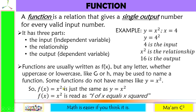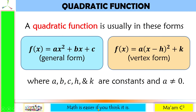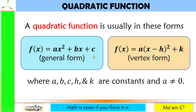Today's discussion will focus on quadratic functions. Quadratic functions are usually in these forms. We have the general form, f of x equals ax squared plus bx plus c, and the vertex form, f of x equals a times the quantity x minus h, squared, plus k.